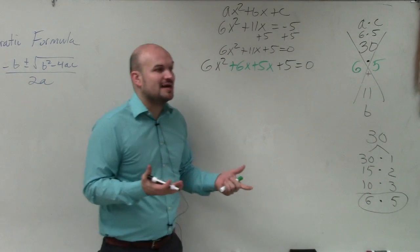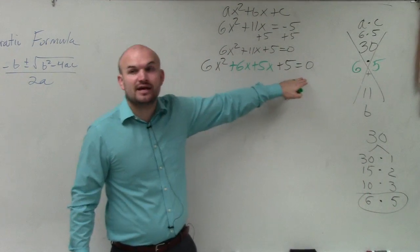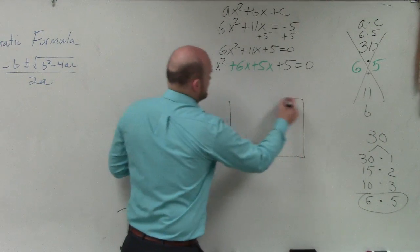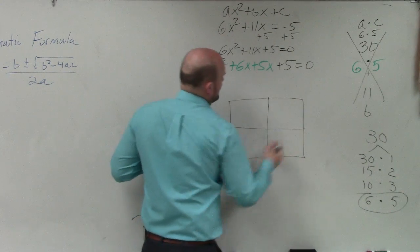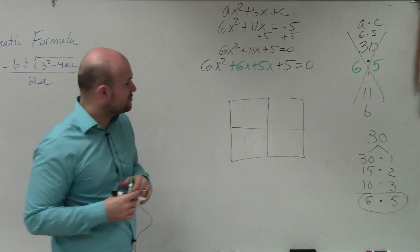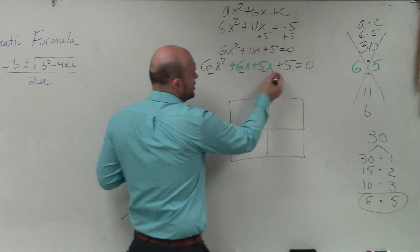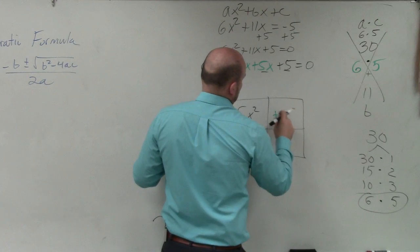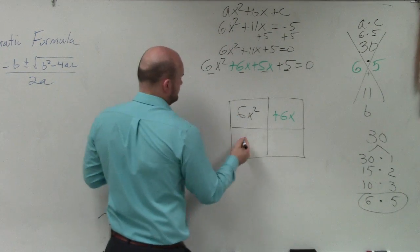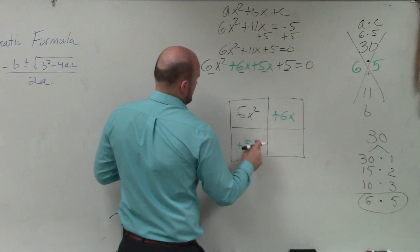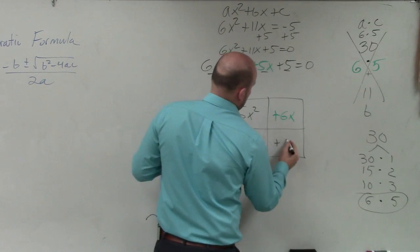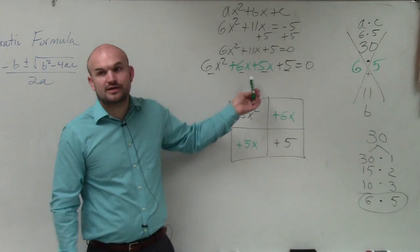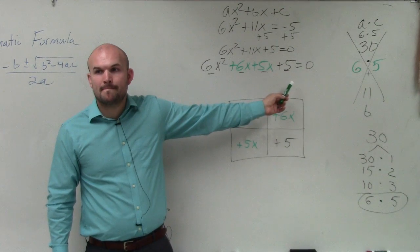Basically, what we're trying to do now is say, hey, here's the area. Find the side lengths of the box. So what I'm going to do is I'm going to create a box. And I'm going to make it two squares in there. And so, since I have four terms, I'm going to put these four terms in there. Does everybody see what I did? I created my box. I created four of them.